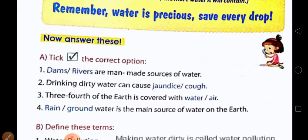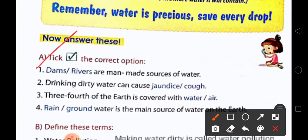Take the correct option. Number one: dams or rivers are man-made sources of water. Answer: dams. Number two: drinking dirty water can cause jaundice or cough. Answer is jaundice.